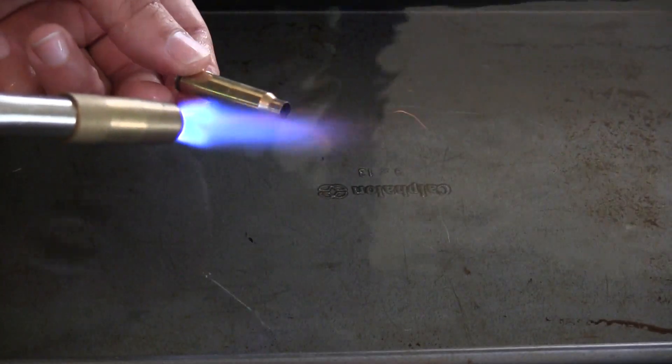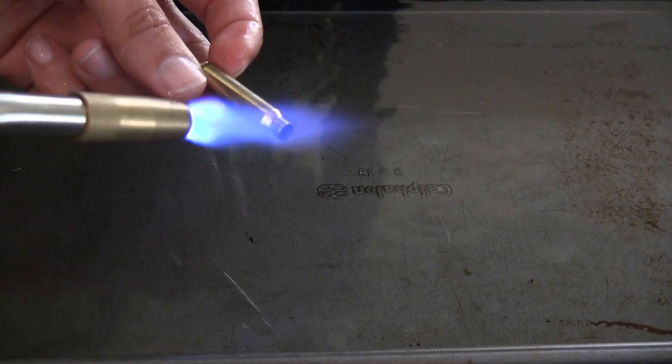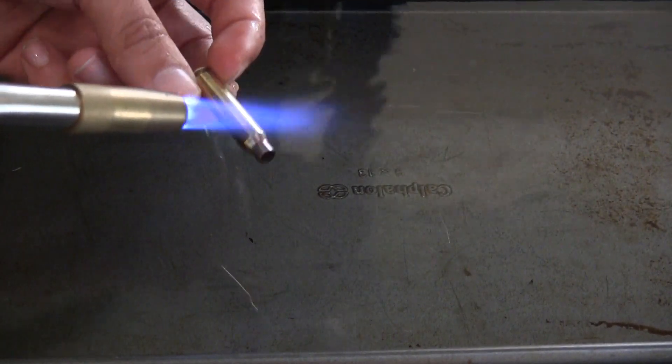The key here is you don't want to see the case mouth actually start to glow. If you do, the temperature has gotten way too hot to anneal and you've actually done damage to the case and possibly removed some of the zinc content.